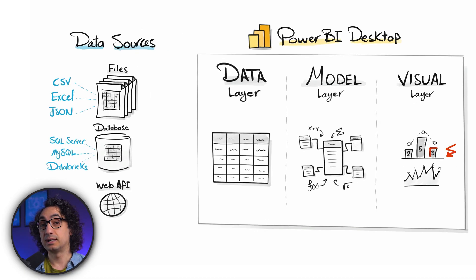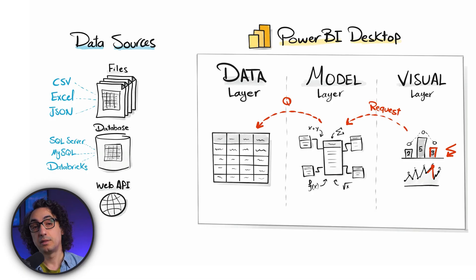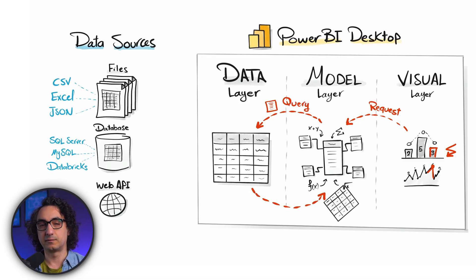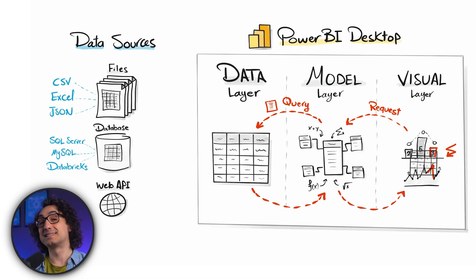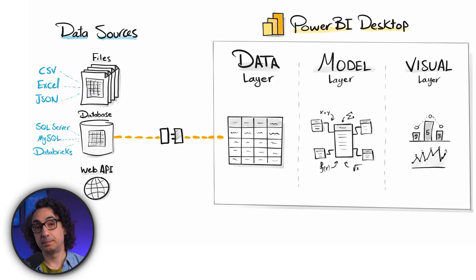Those three layers always work together. For example, if you create a new visual or interact with it, Power BI sends a request to the model to get the data, the model prepares the final result, and sends it back to the visual. There is a flow and everything is interacting together. We have two worlds: the source of your data on one side, and Power BI on the other, and we need to build a connection between them.